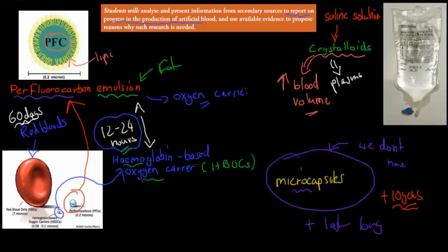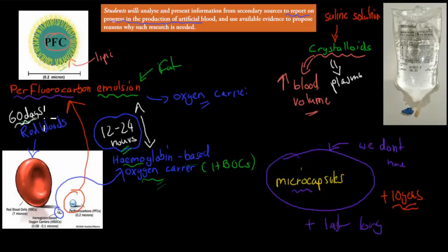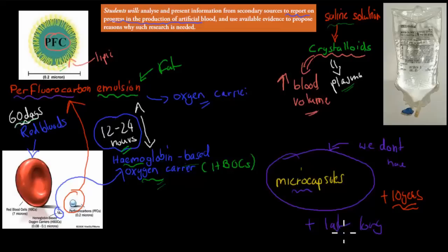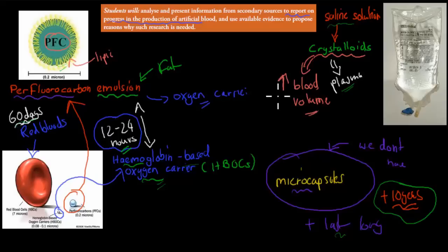To summarize progress in the production of artificial blood: we have perfluorocarbon emulsions and hemoglobin-based oxygen carriers, both of which help carry oxygen and replace hemoglobin — but they only last about one day in the body compared to 60 days for red blood cells. We also have crystalloids, a saline solution that replaces plasma and increases blood volume. What we don't have yet are microcapsules, which will generally last longer and carry more oxygen, but they haven't been produced yet and are probably still at least 10 years away. Remember both the reasons why we need artificial blood and the technologies mentioned.